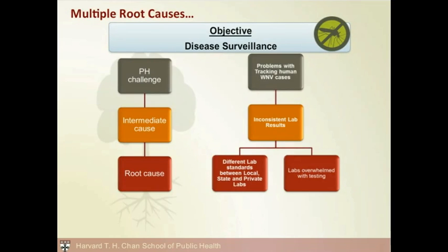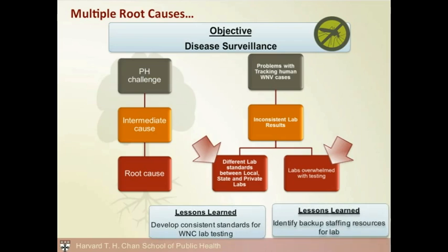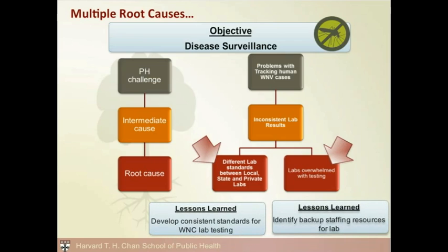Our investigation of the roles of labs during the West Nile virus outbreak also turned up another interesting fact. The various labs reported that they had been overwhelmed by the number of samples they received during the virus outbreak. A second root cause was formulated with this new information, and another important lesson was learned: labs need to identify backup staffing resources to ensure they can correctly process the flood of incoming samples during a severe disease outbreak.